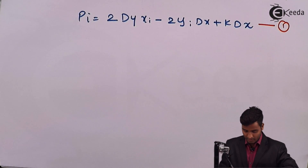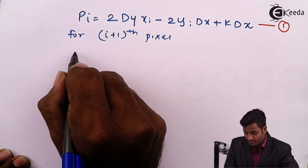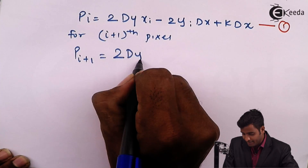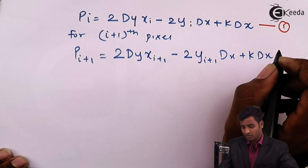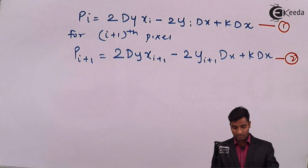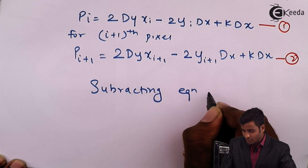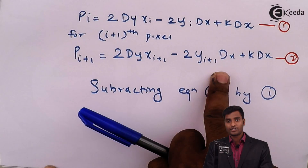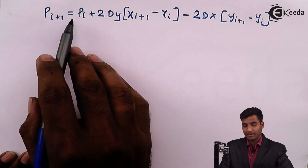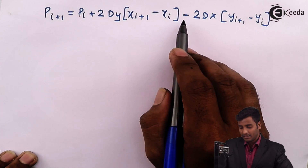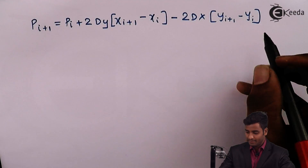Similarly, for the i+1th pixel, pi+1 equals 2(dy)(xi+1) minus 2(yi+1)(dx) plus k·dx. I will give it as equation 2. Now subtracting equation 1 from equation 2, I get pi+1 equals pi + 2(dy)(xi+1) minus 2dx. After subtracting equation 2 by equation 1, we get this equation, which I will name as equation 3.